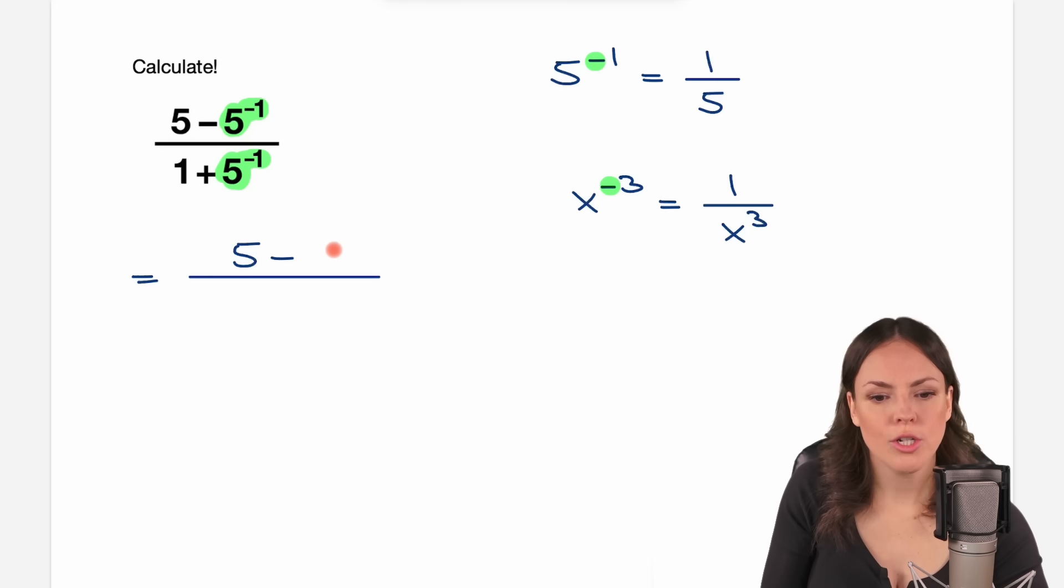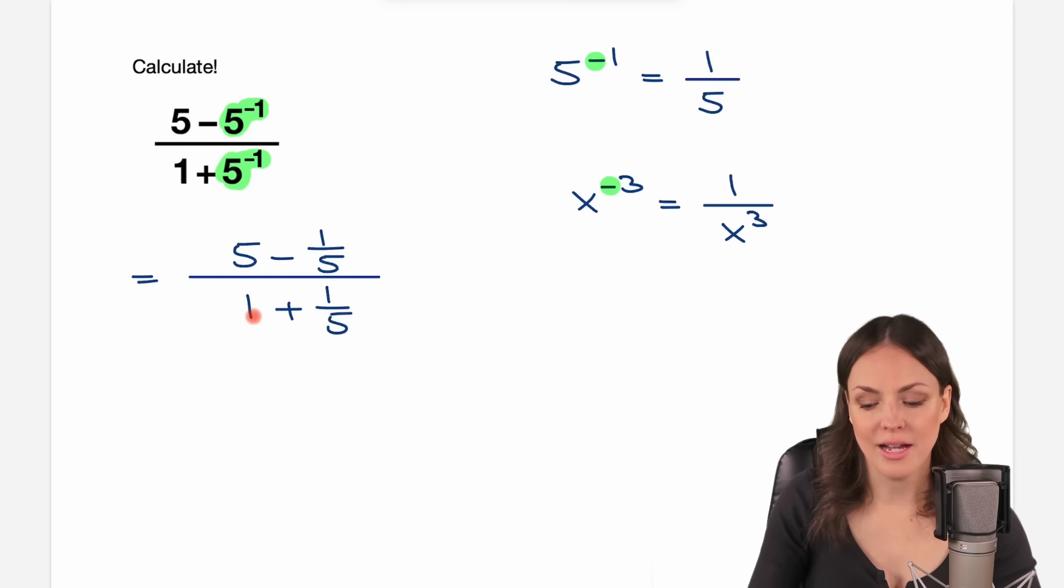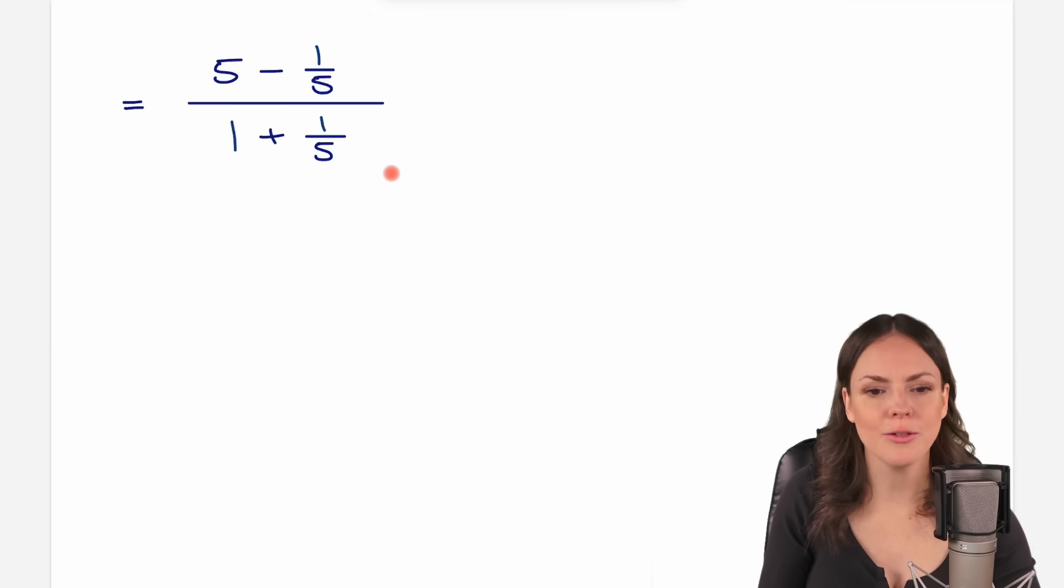So instead of this expression, we can write 1 over 5, and then in the denominator, the same, we have 1 plus, and instead of this expression, we're going to write 1 over 5 as well. This is how our expression looks like now, and now we only have to calculate this, we have a number minus a fraction, and here a number plus a fraction.